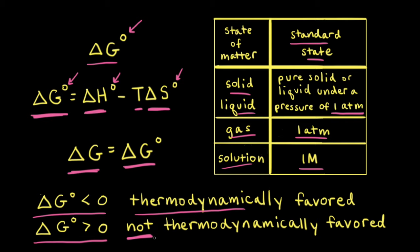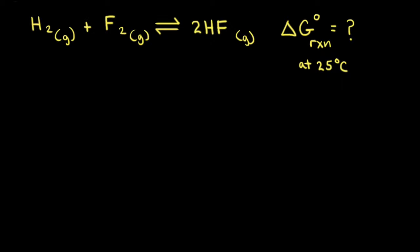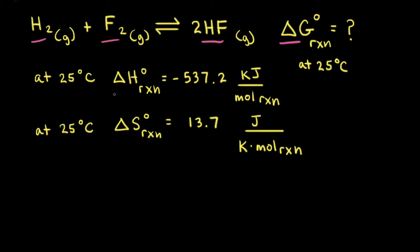Next, let's calculate delta G naught for a chemical reaction — specifically the synthesis of hydrogen fluoride gas from hydrogen gas and fluorine gas. Our goal is to calculate delta G naught for this reaction at 25 degrees Celsius. Delta H naught for this reaction at 25 degrees Celsius is equal to negative 537.2 kilojoules per mole of reaction, and delta S naught is equal to 13.7 joules per Kelvin mole of reaction.